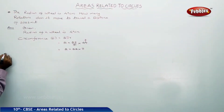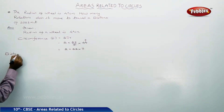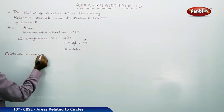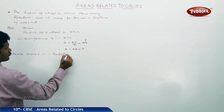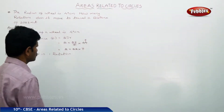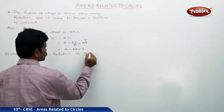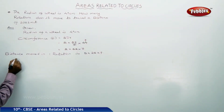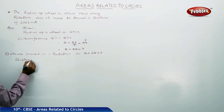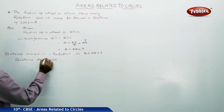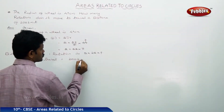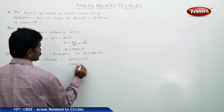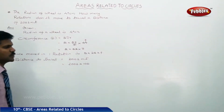Circumference means distance moved in one rotation. Distance moved in one rotation is 2 into 22 into 7. Now, distance to travel is equal to 2002 meters, which must be converted — 1 meter is equal to 100 centimeters.